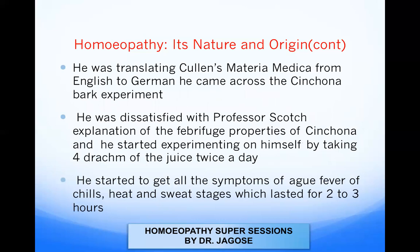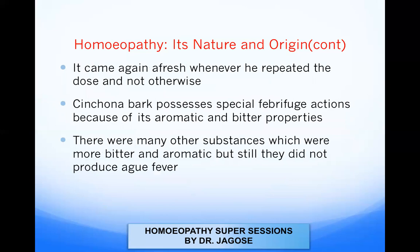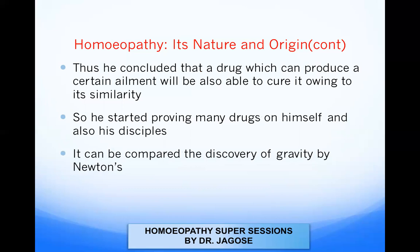He was translating Cullen's Materia Medica from English to German and came across the Cinchona bark experiment. He was dissatisfied with Professor Cullen's explanation of the febrifuge properties of Cinchona, and started experimenting on himself by taking four drachmas of the juice twice a day. He started to get all the symptoms of ague fever — the chills, heat and sweat stage — which lasted two to three hours. The symptoms came again whenever he repeated the dose and not otherwise. Cinchona bark possesses special febrifuge action, but there were many other substances more bitter and aromatic that did not produce ague fever. Thus, he concluded that a drug which can produce a certain ailment will also be able to cure it owing to its similarity.